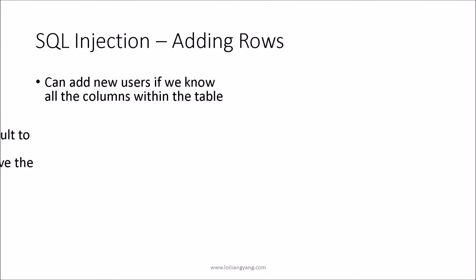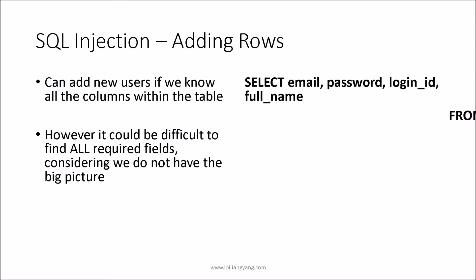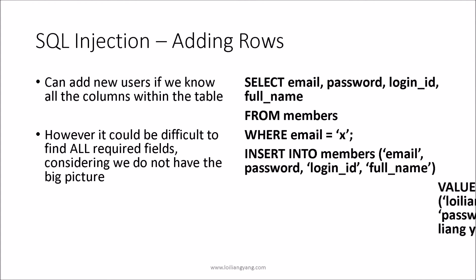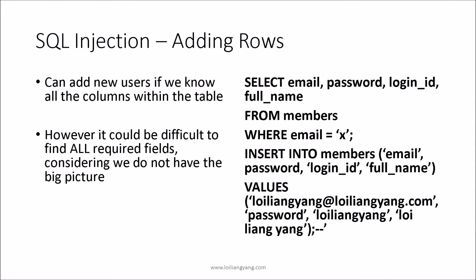Most of the time, it can be extremely difficult to find all the columns within a table because every organization structures its tables differently. There can be multiple foreign keys or associations with other tables that make it impossible to find all column names. As such, this approach is only recommended if you have done your due diligence regarding the table structure.